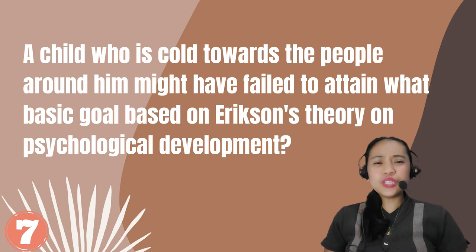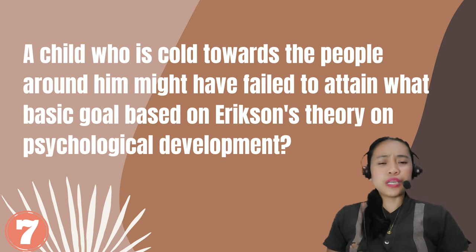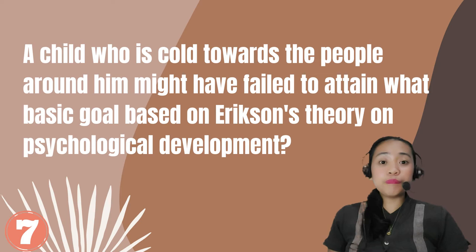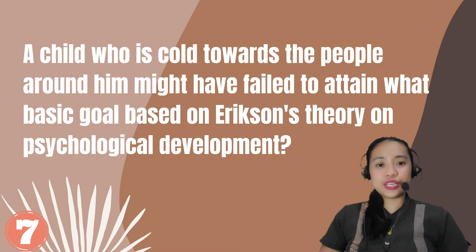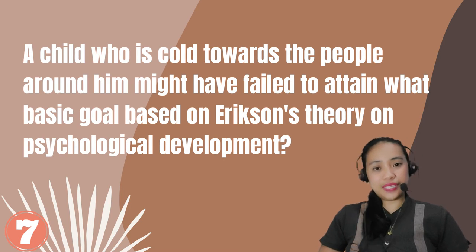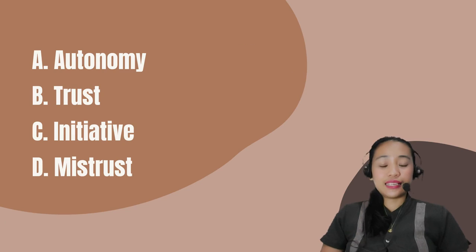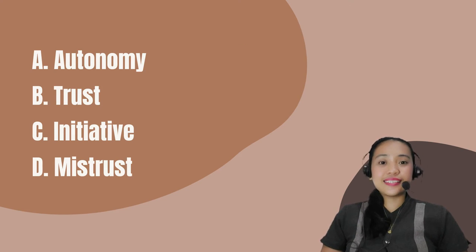Number 7. A child who is cold towards the people around him might have failed to attain what basic goal based on Erikson's theory of psychological development? A. Autonomy. B. Trust. C. Initiative. D. Mistrust.